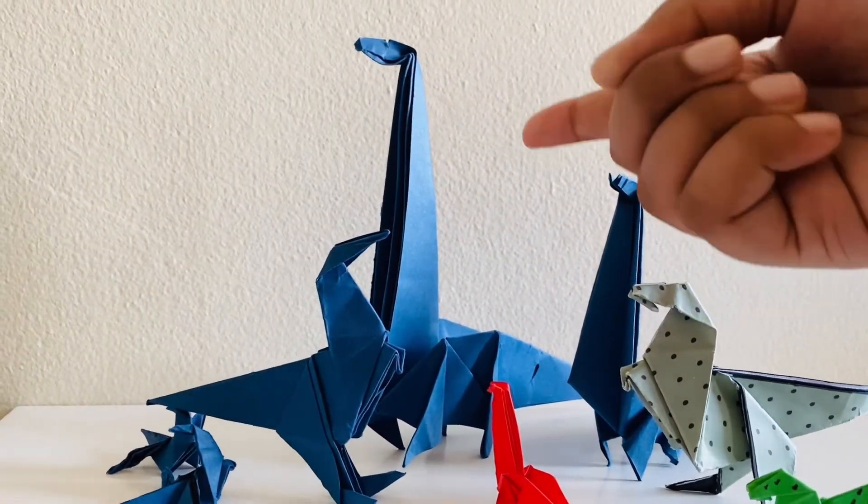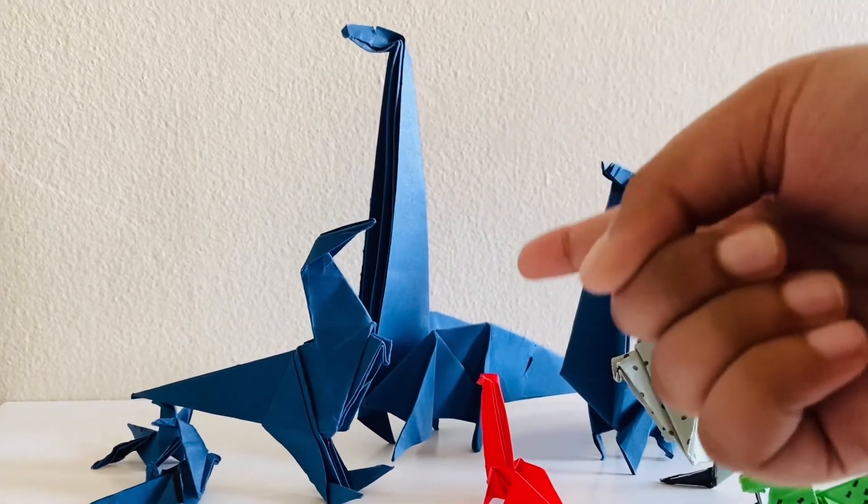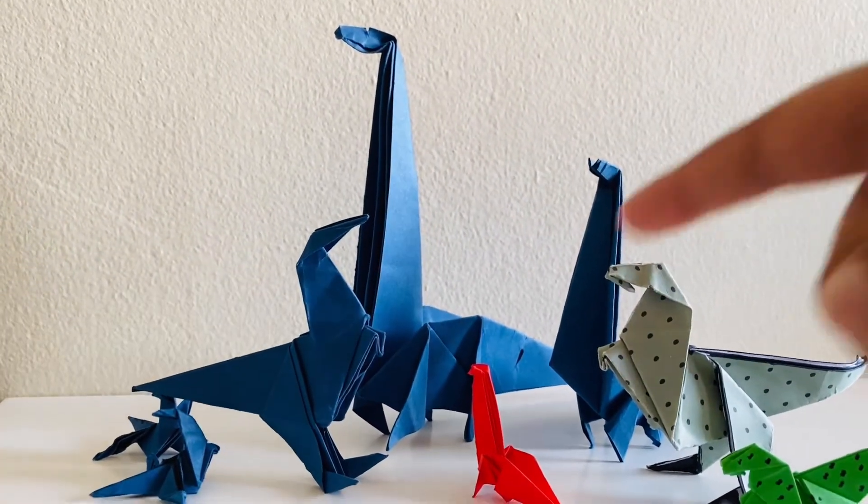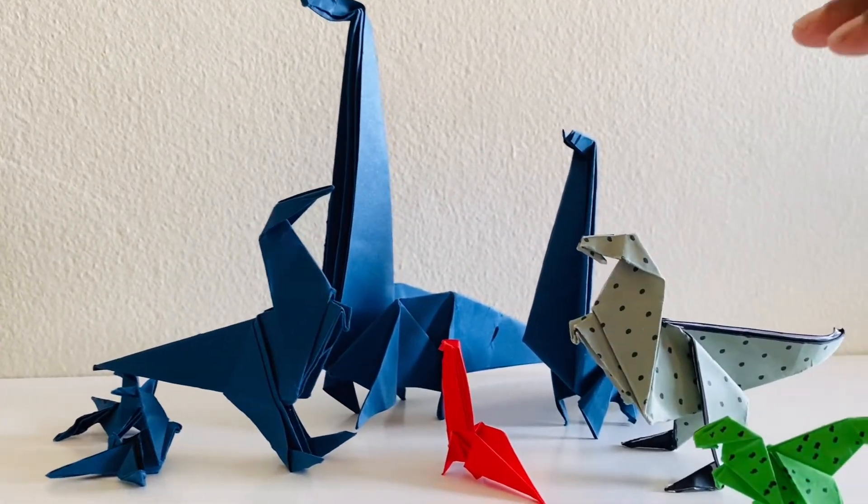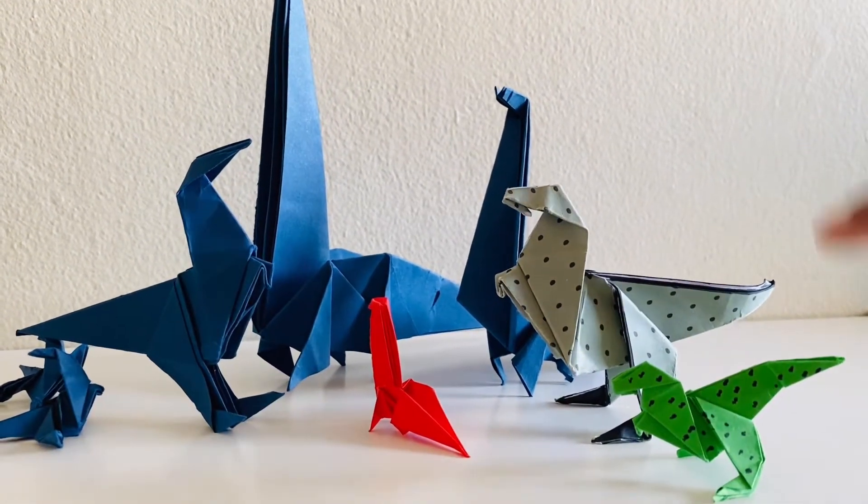So you can see that I've made a large Brachiosaurus, a medium one, a baby one, a Velociraptor and a daddy T-Rex and a baby T-Rex.